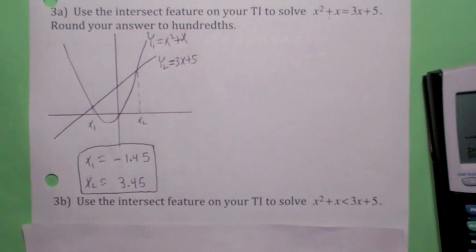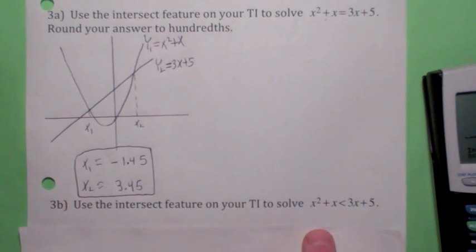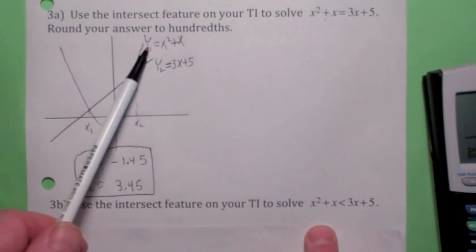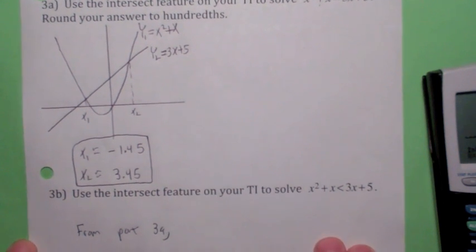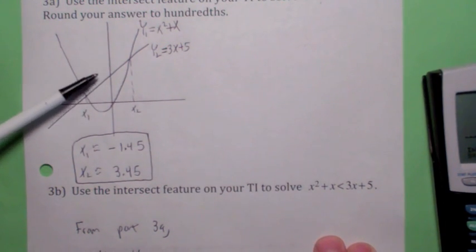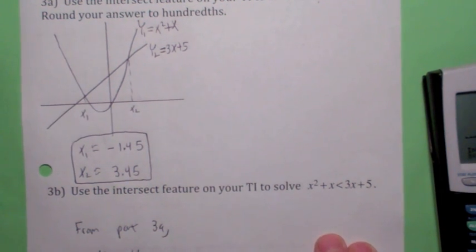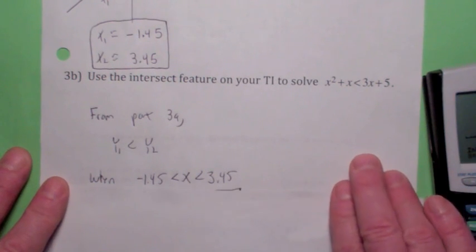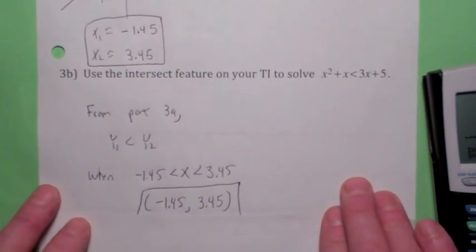Okay, last thing. So how would you use the intersect feature to solve this inequality? When is, let's see, this is y1, this is y2. When is y1 less than y2? What values of x is that true? Well, the graph of y1 is below the graph of y2 precisely when x is between x1 and x2, right? So that's your solution. Negative 1.45 is less than x is less than 3.45. Or you can write an interval notation.